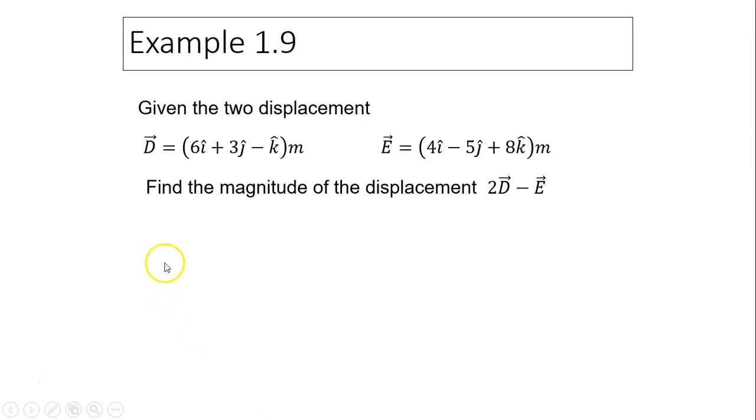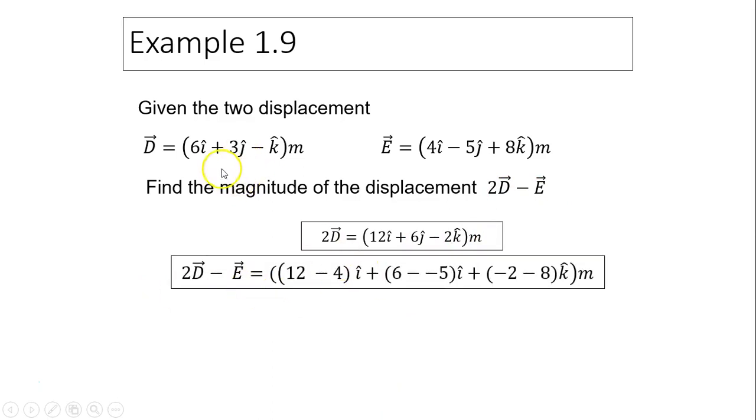Now, given two displacements, d equals this, e equals that. What is the magnitude of 2d minus e? Well, first step is to find 2d. Remember, one vector times a scalar, we just scale it. So 2d is 12i plus 6j minus 2k meters. Now, what is 2d minus e? 2d minus e, you just use 2d i minus e i, j minus j, k minus k.